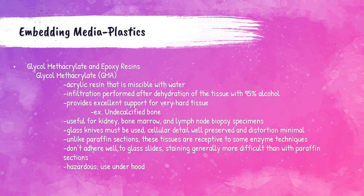Plastics can also be used as embedding media. The two types used are glycol methacrylate (GMA) and epoxy resins. GMA is an acrylic resin that can be mixed with water; after dehydration with 95% alcohol, infiltration can occur. GMA provides great support for very hard tissue, especially undecalcified bone, and is a particularly good embedding medium for kidney, bone marrow, and lymph node biopsy specimens. When cutting GMA-embedded specimens, a glass knife must be used. GMA-embedded tissues are receptive to some enzyme techniques but generally do not stain well as the embedding media is not removed from the tissue sections, and it doesn't adhere well to glass slides. Embedding with GMA should be performed under a hood as the chemicals used are hazardous.